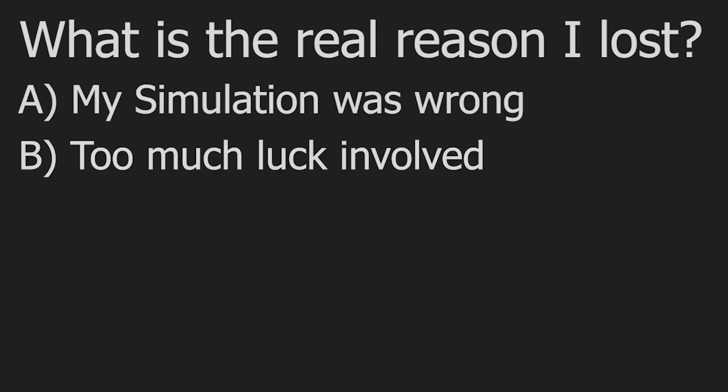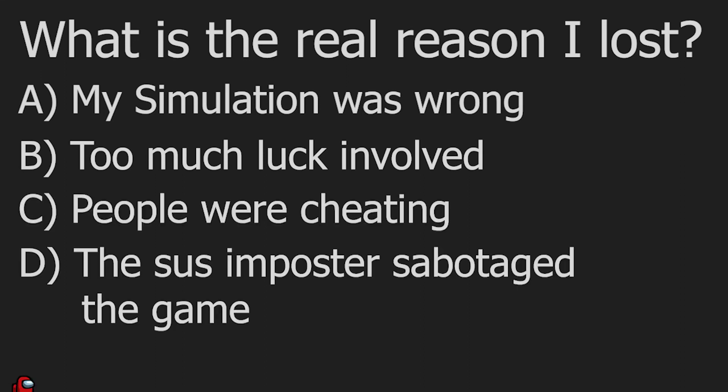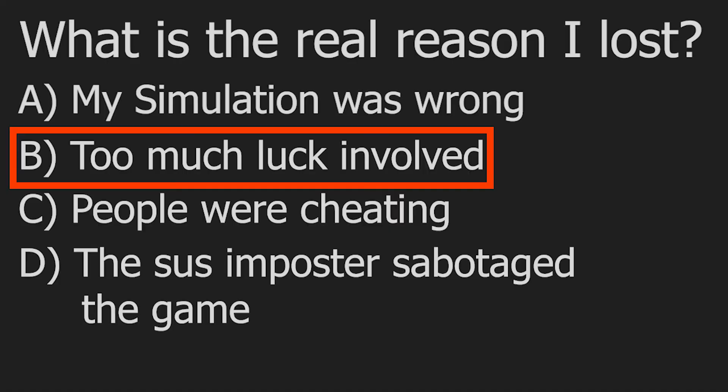Now it's time for a quiz. What is the real reason I lost? A: My simulation was wrong. B: There was too much luck involved. C: People were cheating. D: The sus impostor sabotaged the game. Now pause the video and think — what do you think is the real reason? Leave your answer in the comments below. So if you said A — how dare you doubt my programming skills, my simulation was 100% correct. If you said B, you're probably right because we only played 10 rounds so a lot of people got lucky. But you can never truly tell who the impostor is, so I'd accept D as a valid answer too. But when the teacher proved mathematically that my strategy was the best strategy, like two minutes afterwards, I could only smirk under my mask knowing that I was the real winner.